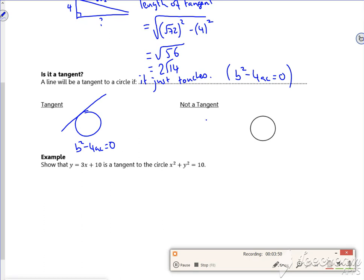It could be not a tangent, so it could cross twice, in which case b squared minus 4ac is greater than 0, so we've got two crossing points. Or it could be that it misses completely, in which case b squared minus 4ac is less than 0. So I can use my discriminant to help.